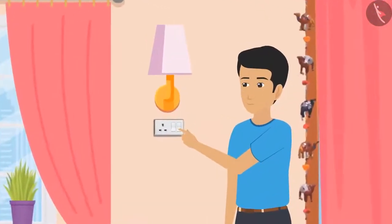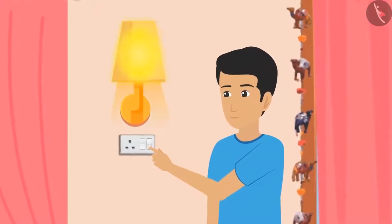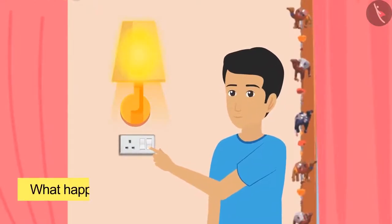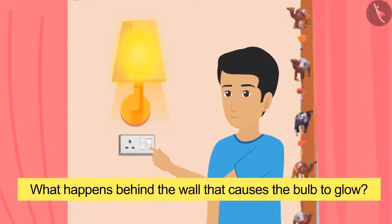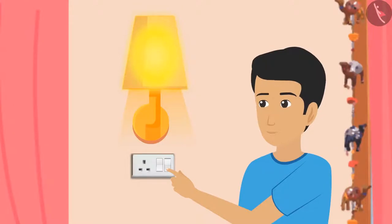You must have seen this setting in your house—you press the switch and the bulb starts glowing. Have you ever thought about what happens behind the wall that causes the bulb to glow? You must have heard from elders in your house or teachers in school that the glowing of a bulb is based on electric current.